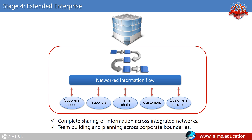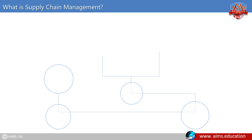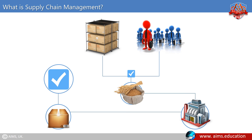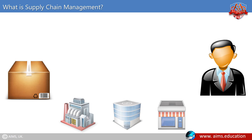Supply chain management is the management of the flow of goods and services. It includes the movement and storage of raw materials, work-in-process inventory, and finished goods from point of origin to point of consumption. Every product that reaches an end user represents the cumulative effort of multiple organizations. Some organizations only paid attention to what was happening within their four walls, but the entire chain of activities ultimately delivered products to the final customer — the result was a disjointed and often ineffective supply chain.